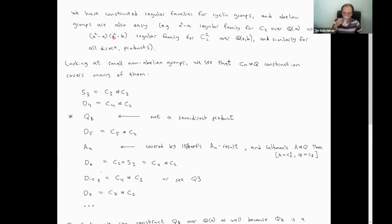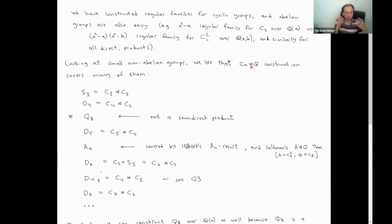So we can do cyclic groups, we can do abelian groups, we can do direct products, and we have this new construction that says that if you can do a group Q, then you can do a semi-direct product Cm by Q, independently of N and independently of the action, as long as this extension is split. And now if you look at small non-abelian groups, you discover the pleasure that we've covered all of them except for one, which is the quaternion group Q8, which I'm going to do next.